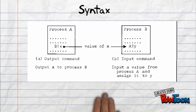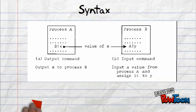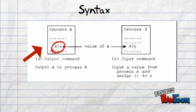Here we see an example of synchronization. Process A outputs X to process B via exclamation mark, and process B inputs a value via question mark from process A and assigns it to Y.